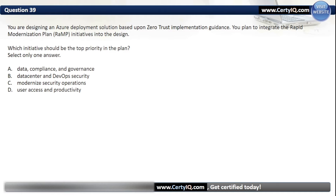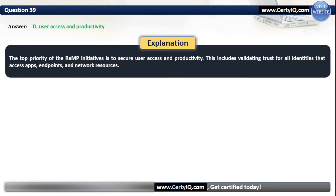Question 39. You are designing an Azure deployment solution based on Zero Trust implementation guidance and plan to integrate the Rapid Modernization Plan (RaMP) initiatives. Which initiative should be the top priority? The correct option is D: User Access and Productivity. The top priority of the RaMP initiatives is to secure user access and productivity, including validating trust for all identities that access apps, endpoints, and network resources.